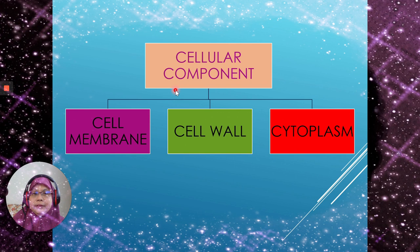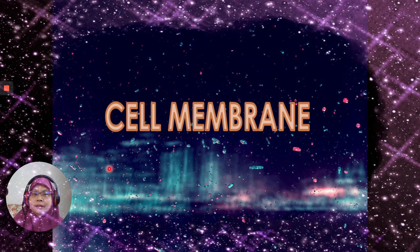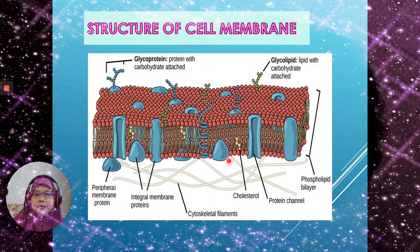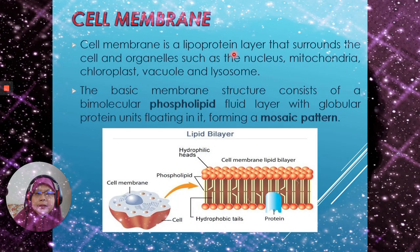In cellular components, there are cell membrane, cell wall, and cytoplasm. We will learn the structure and function of these three components. First, we learn about the cell membrane. Cell membrane is a lipoprotein layer that surrounds the cell and organelles. The basic membrane structure consists of a bimolecular phospholipid fluid layer with globular protein units floating in it, forming a mosaic pattern.